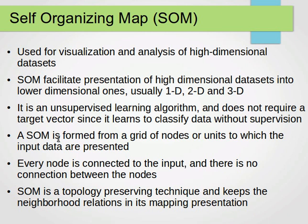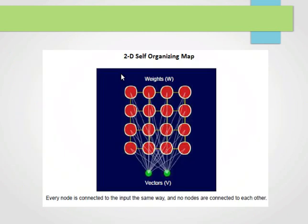An SOM is formed from a grid of nodes or units to which the input data are presented. Every node is connected to the input and there is no connection between the nodes. SOM is a topology preserving technique and keeps the neighborhood relations in its mapping presentation. This is what they look like usually.